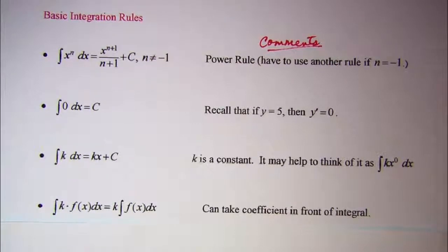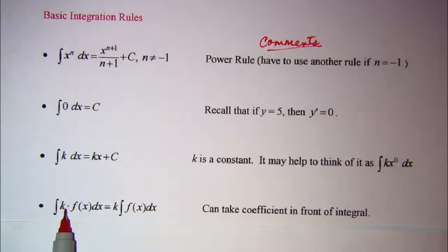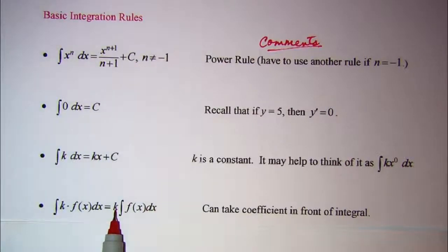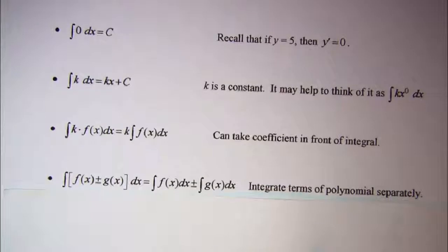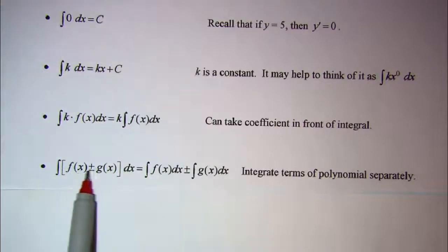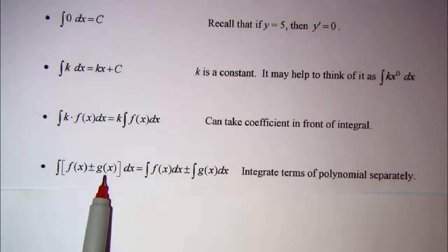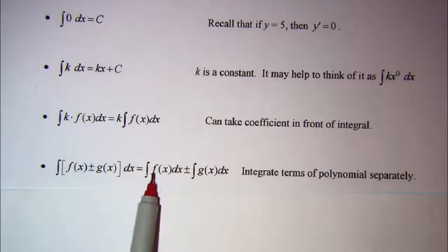Our next rule: if we integrate some constant multiplied by a function with respect to x, we can take that constant out in front of the integral sign — it equals that constant times the integral of f(x) with respect to x. And if we integrate a polynomial with several terms, addition or subtraction doesn't matter — we can integrate each term individually.